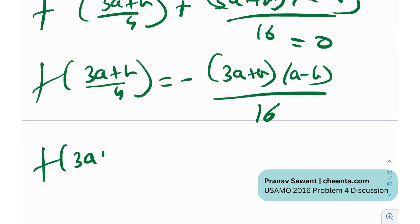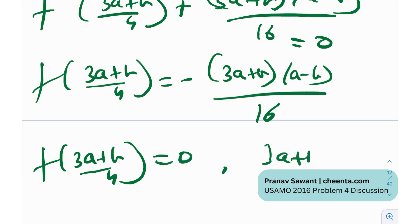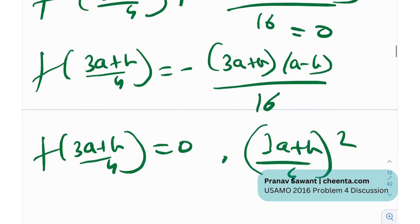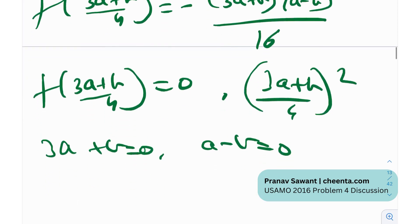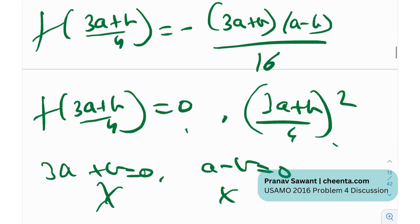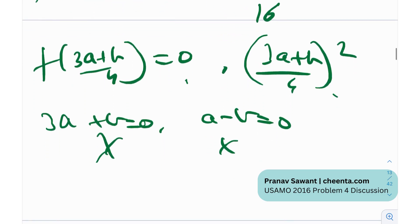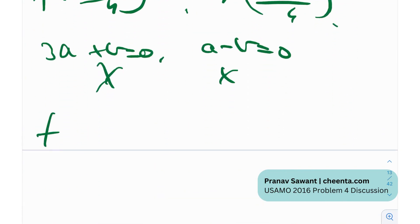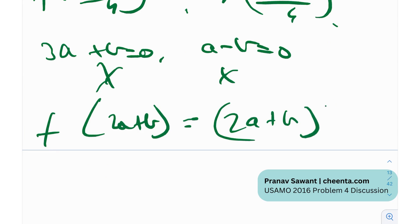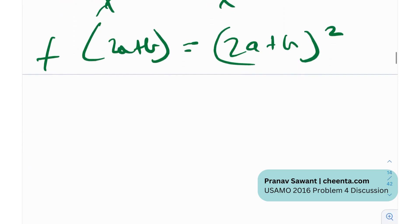Can f((3a+b)/4) = ((3a+b)/4)²? No, because a and b are distinct, and a negative quantity can never equal a perfect square. Both possibilities fail, so our assumption that f(2a+b) = 0 is incorrect. Therefore f(2a+b) = (2a+b)². Substituting this back into the equation gives a simplified form: [f((3a+b)/4) + (3a+b)(a−b)/16]·b² + [f((a−b)/4) + (3a+b)(a−b)/16]·(2a+b)² = 0.